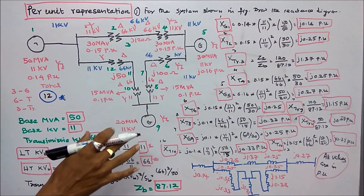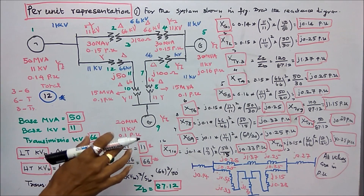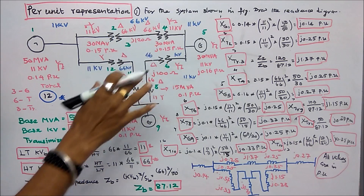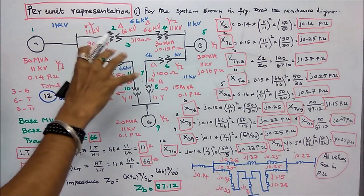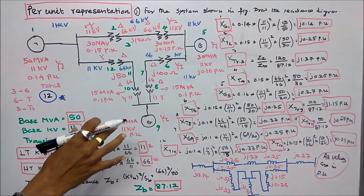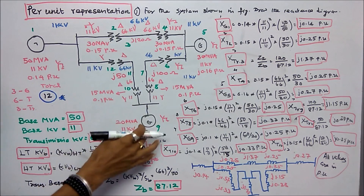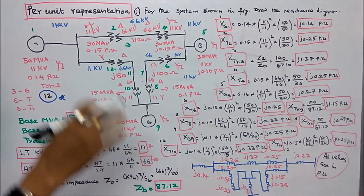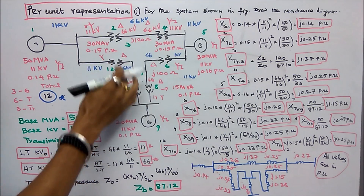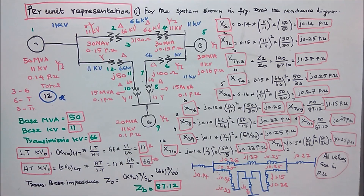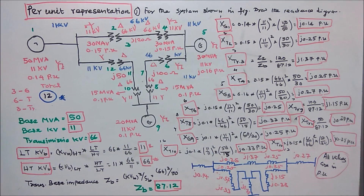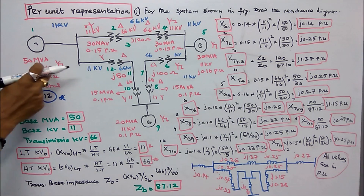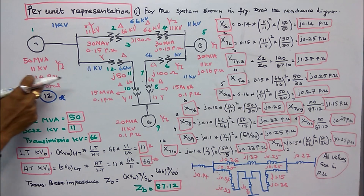In this class we work out two problems in per unit representation. Problem number one: for the system shown in the figure, draw the reactance diagram. The system consists of 12 components: 3 generators, 6 transformers, and 3 transmission lines. Generator 1 rating is 50 MVA, 11 kV, per unit reactance is 0.14.